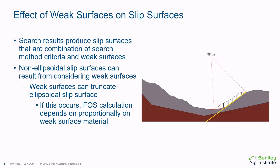Under the default searching mode, the search results will produce slip surfaces that are a combination of search method criteria and weak surfaces. The software will automatically recognize if a particular trial slip surface crosses a weak surface and will then try to follow the truncated surface. It's possible that non-ellipsoidal slip surfaces will result from considering weak surfaces. If an ellipsoidal slip surface is truncated by a weak surface, then the shear resistance will be calculated according to the material selected and assigned to the weak surface. The amount of influence of a weak surface will be related to the area of the slip surface that ends up following the weak surface.